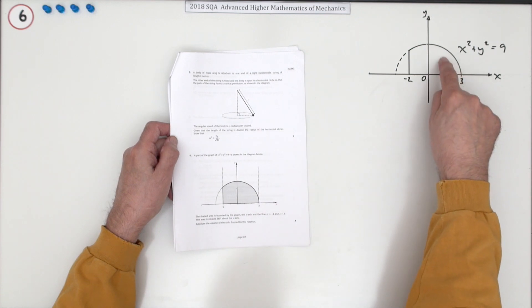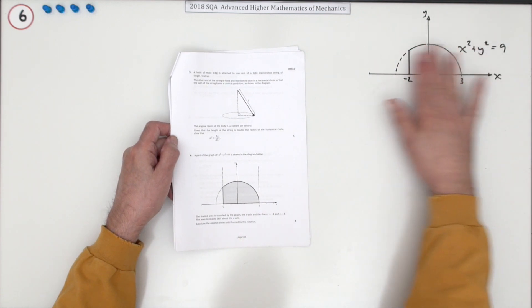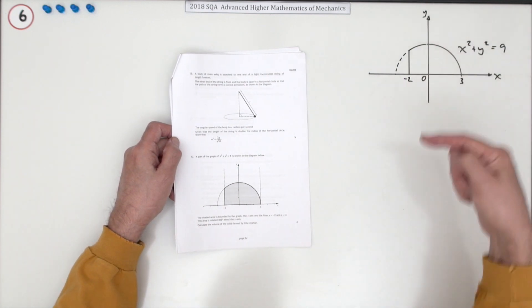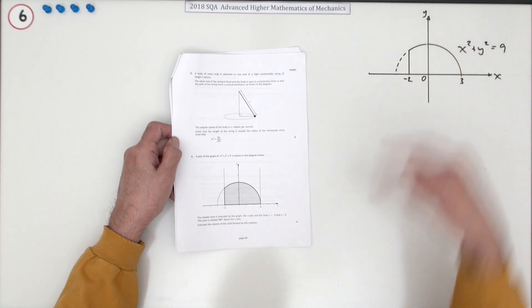What's the volume of revolution produced if you rotate this shaded area, well not shaded, which is a portion of a circle, if it's rotated 360 around the x-axis.